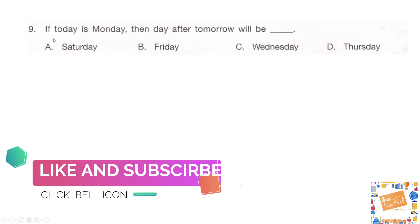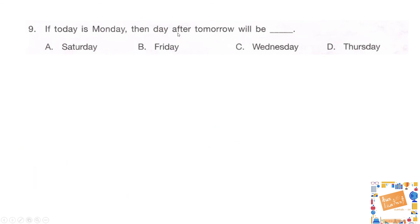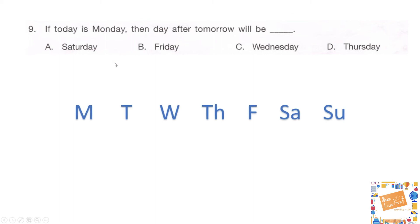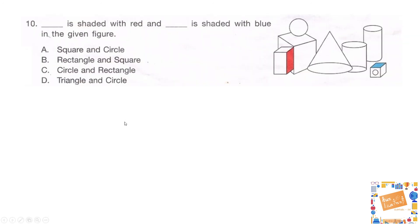Question 9: if today is Monday, what will the day after tomorrow be? Options are A — Saturday, B — Friday, C — Wednesday, D — Thursday. Writing out the days of the week: if today is Monday, tomorrow is Tuesday, and the day after tomorrow will be Wednesday. So the correct answer is option C.